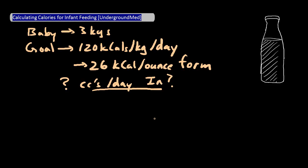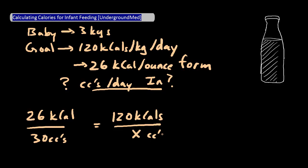So again, there are a lot of ways to calculate this. The way I like to do it is, I'll take the 26 kilocalories over 30 cc's. That's where we're going to be feeding the baby. And I know that my goal is going to be 120 kilocalories. And so I'm going to put that over x. So I'll solve for x. And that's going to let me know that that's going to be 140 cc's per kg per day.